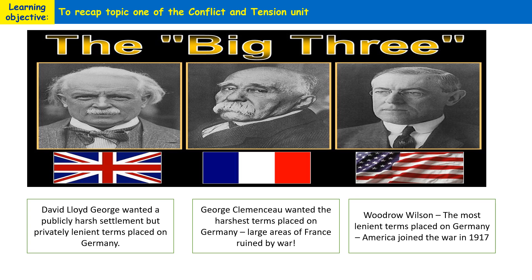Finally, we've got Woodrow Wilson, who you could argue wanted the most lenient terms placed on Germany. As America only joined the war in 1917, he was concerned that by punishing Germany too harshly it would result in a repeat of the First World War. So he had the most lenient attitude towards Germany — which was at odds with what Clemenceau and, to a lesser extent, Lloyd George wanted to do.